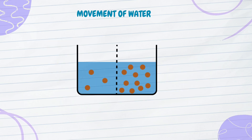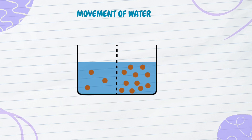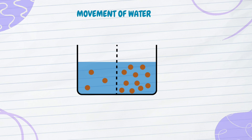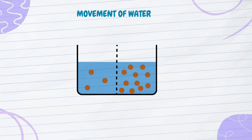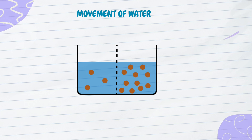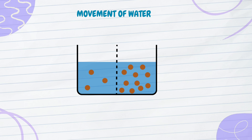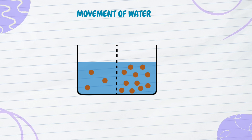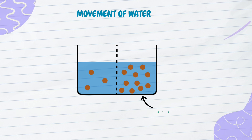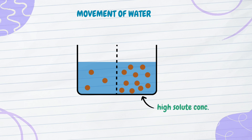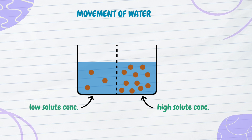Osmosis is the movement of water from the region of higher concentration to the region of low concentration through a semi-permeable membrane. For osmosis to take place, first, there must be two solutions with different concentrations — one solution with a high-solute concentration and the other with a low-solute concentration.